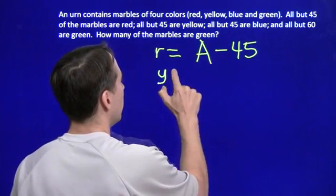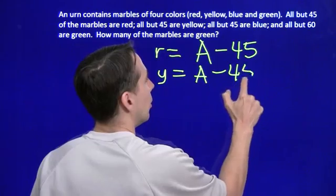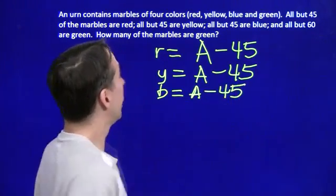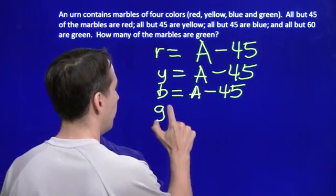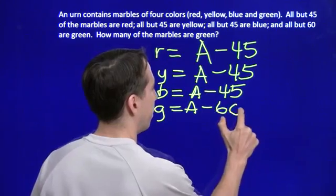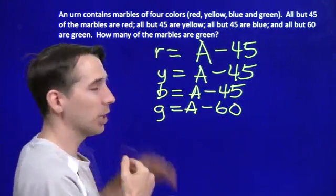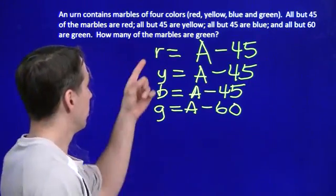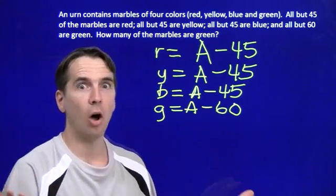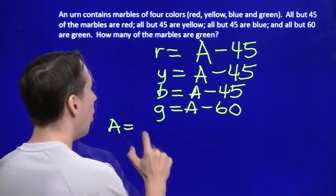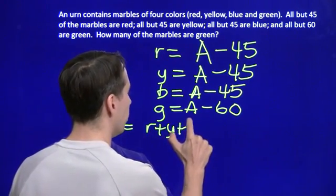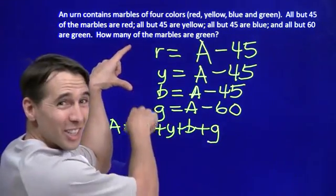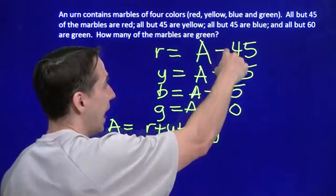Now what? I've got 4 equations and 5 variables. What do I do? We have to remember what the variables mean. R is red, y is yellow, b is blue, g is green. A is all. A is all of them. That's red plus yellow plus blue plus green. Now I have 5 equations in 5 variables. Red, yellow, blue, and green. I know what each of these is in terms of a. I can substitute all of these down here. I add up all of these, I get a.